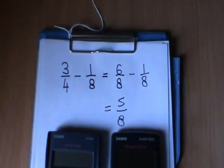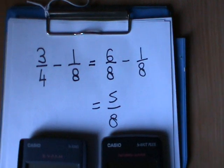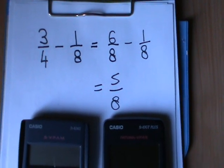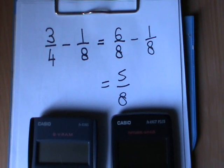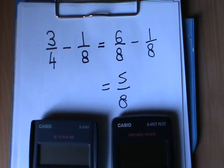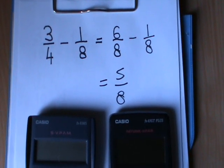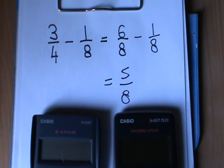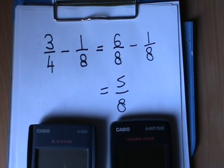So let's remind ourselves of one of the sums we did before: 3 quarters take away 1 eighth. To do that sum, if you're doing it manually, you change the 3 quarters to 6 eighths and then take away the 1 eighth. So that gives us the answer 5 eighths.